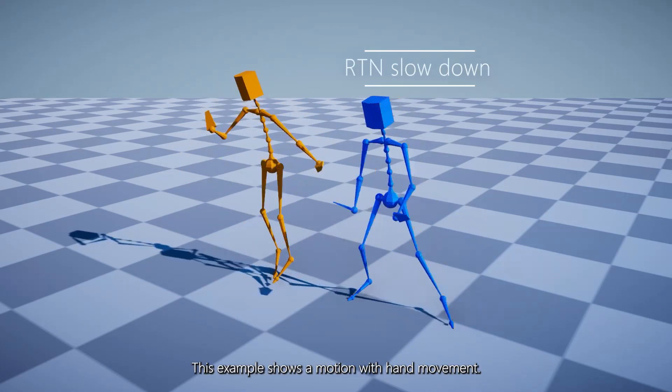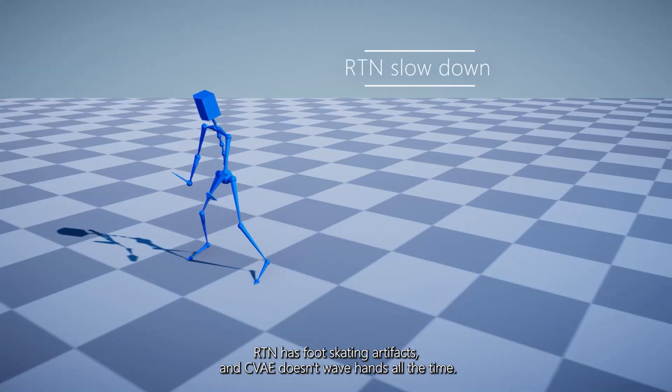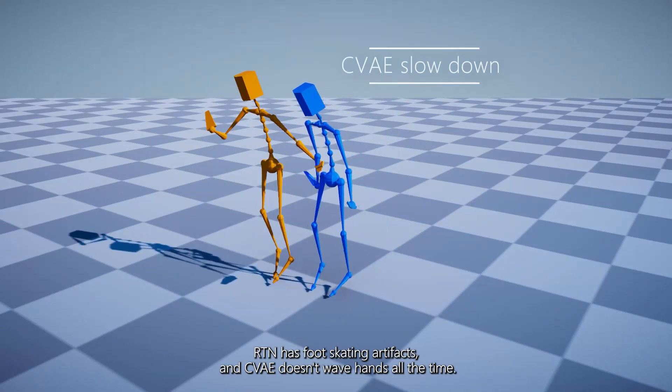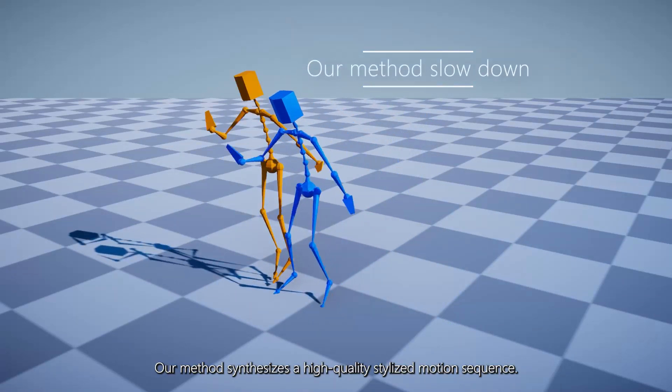This example shows a motion with hand movement. RTN has foot-skating artifacts, and CVAE doesn't wave hands all the time. Our method synthesizes a high-quality stylized motion sequence.